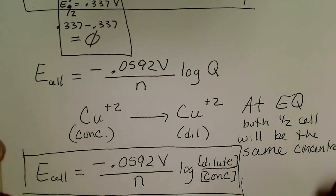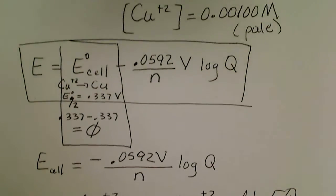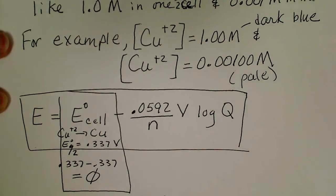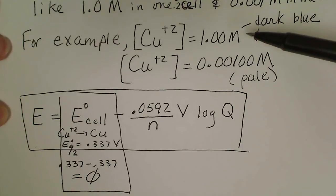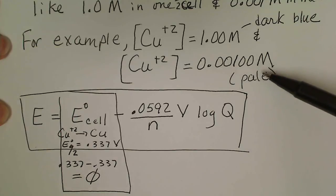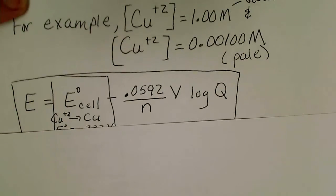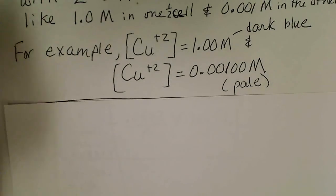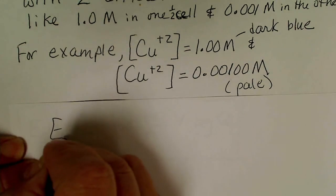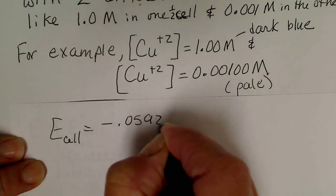Going ahead with the example: one beaker has a 1.0 molar solution and the other beaker has a 0.01 molar solution. Plugging those into the simplified Nernst equation, we rewrite: E-cell equals negative 0.0592 volts divided by n.